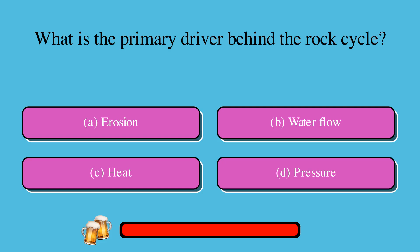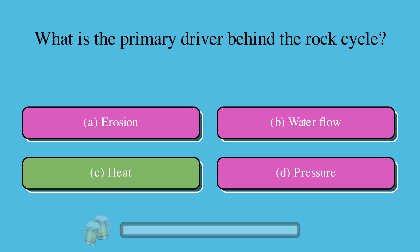What is the primary driver behind the rock cycle? A. Erosion, or B. Water flow, or C. Heat, or D. Pressure? The correct answer is C. Heat.